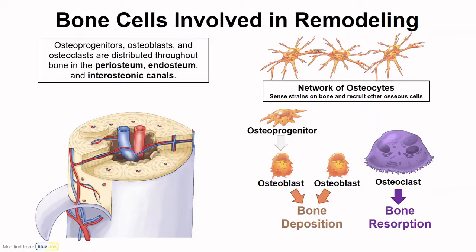Many different types of cells are involved in bone remodeling. Osteoprogenitor cells, osteoblasts, and osteoclasts are found in well-vascularized areas near the periosteum, the endosteum, and within these perpendicular interosteonic canals.